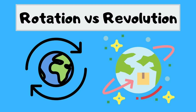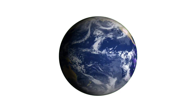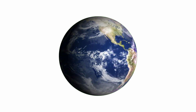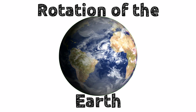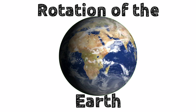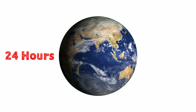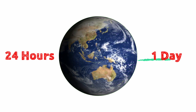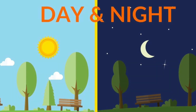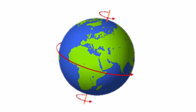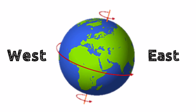The spinning of the Earth on its own axis is called the rotation of the Earth. The Earth completes one rotation in 24 hours, that is one day. The rotation of the Earth causes day and night.